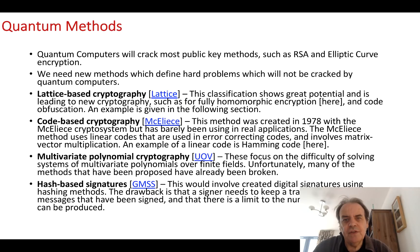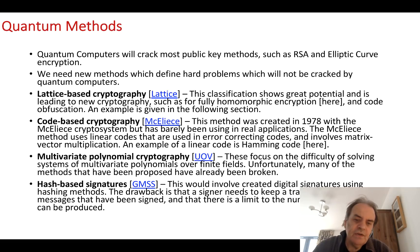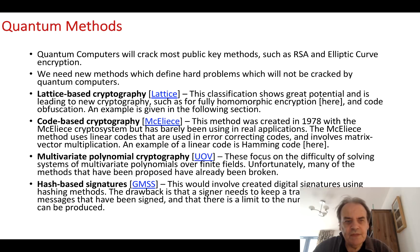Quantum computers will be able to crack most of our public key methods, especially RSA, elliptic curve, and El-Gamal. They will thus be able to crack key exchange methods which use public key encryption and also when we sign for identity. Some of the methods that are proposed are lattice-based cryptography, code-based, multivariate polynomial cryptography, and hash-based signatures.